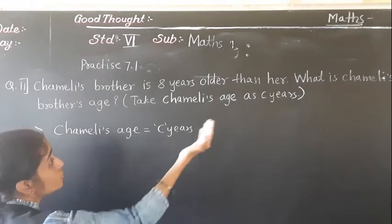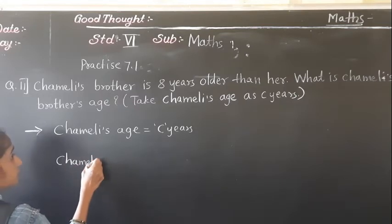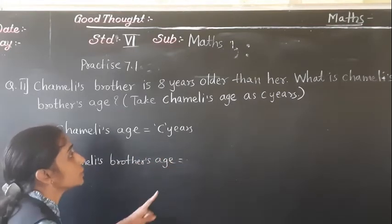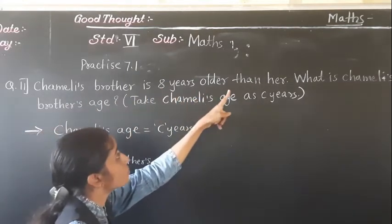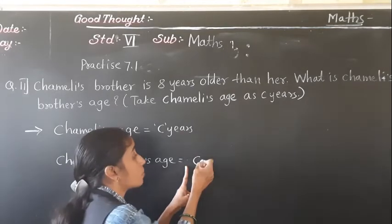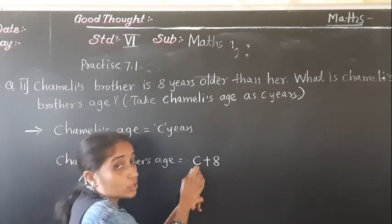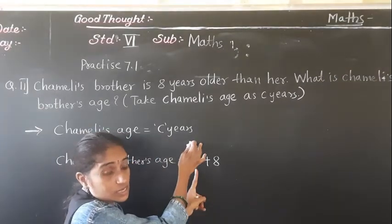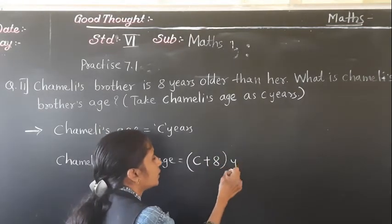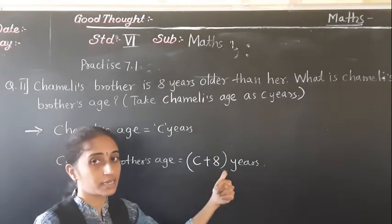He is 8 years older than her. Her age is C years. So we need to add 8 to Chamele's age. Therefore Chamele's brother's age is C plus 8 years.